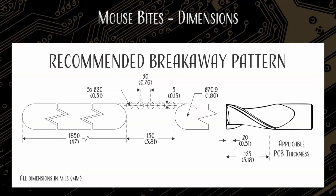Sometimes customers ask for very specific dimensions on where they want their mouse bites or where they want their V-score to happen, and we're going to give them what they want. It just does take a lot of time — I have to manually place each hole, manually place each slot, and then still compare it with our rules to make sure it's going to work out. There's a question regarding the 5-mil offset: it's outside. If we draw a line at the board edge and move 5 mils out from that, that's where our hole centers are — so you're losing about 5 mils of material on the inside of your board edge.